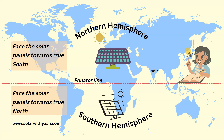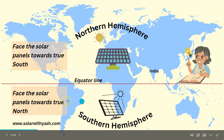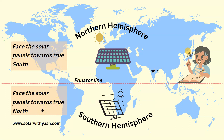For people living in the northern hemisphere, such as in India, they should keep their solar panels towards true south. While on the other hand, people living in the southern hemisphere, such as in Australia, they should point their solar panels towards true north. So for the northern hemisphere, the direction is true south, and for the southern hemisphere, it is true north.